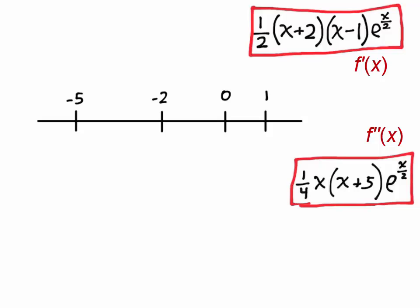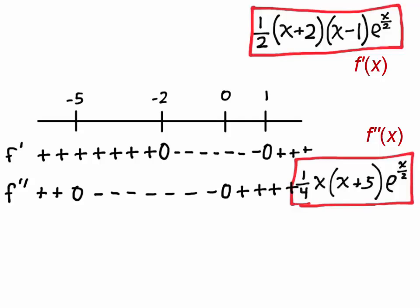So the sign chart for f prime is going to be positive up to negative 2, negative up to 1, and then positive afterwards, because the only two factors of f prime that change the sign are x plus 2 and x minus 1. And similarly, the sign chart for f prime prime is going to be positive up to negative 5, then negative until 0, and then positive after that.